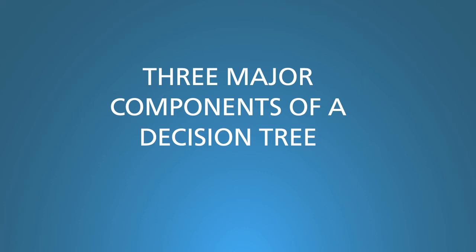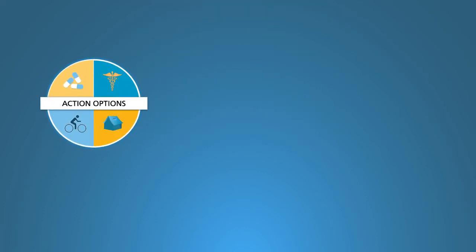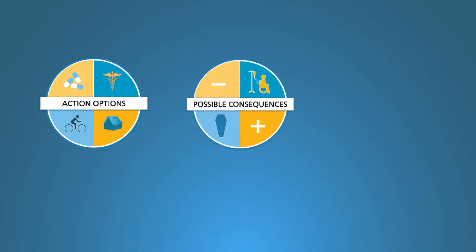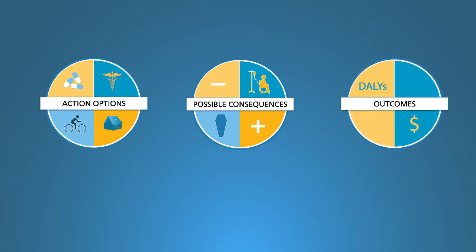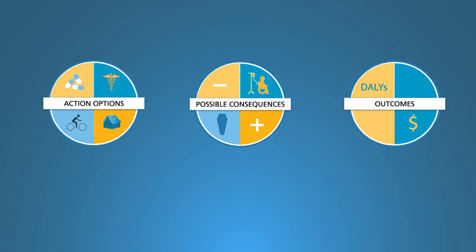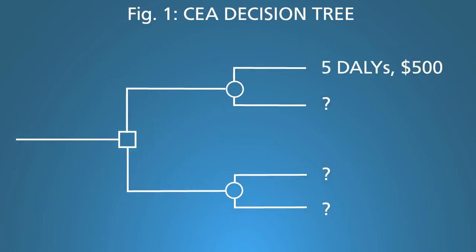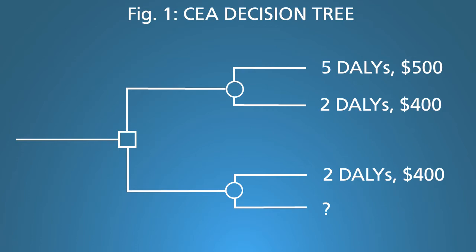There are three major components of a decision tree: action options, which show the decision being considered; consequences, which describe the mix of outcomes and their probabilities; and the value of health and cost outcomes for each set of consequences. Once you have these in a tree, you can calculate the expected value of each action option for health and cost outcomes, and you can determine your cost-effectiveness ratio to make better decisions about health spending.